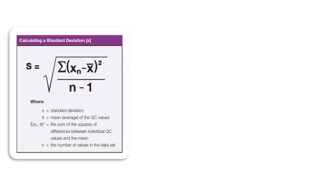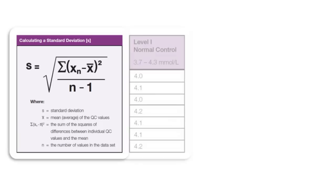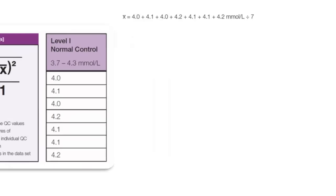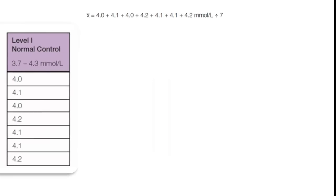Although most calculators and spreadsheet programs automatically calculate standard deviation, it's important to understand the underlying mathematics. Therefore, let's look at an example using the same dataset from before. Begin by calculating the mean: first add all the values collected for that control, then divide the sum of these values by the total number of values. Now that the mean has been determined, let's move on to the standard deviation.